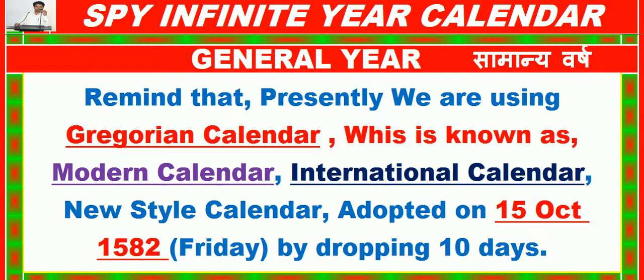Reminder: presently we are using the Gregorian Calendar, which is known as the Modern Calendar, International Calendar, or New Style Calendar. It was adopted on October 15, 1582 (Friday) by dropping 10 days.